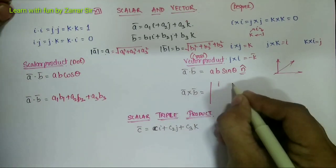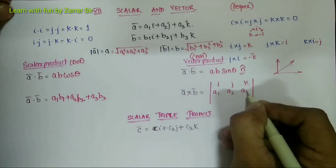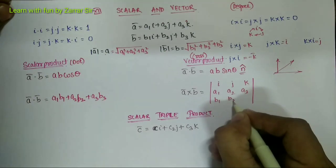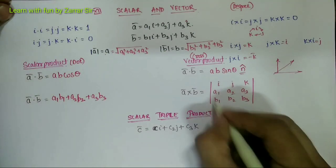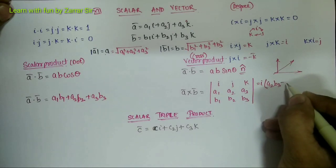And a bar cross b bar would be the determinant of i, j, k; a1, a2, a3; b1, b2, b3. We know how to solve the determinant - it is very simple.